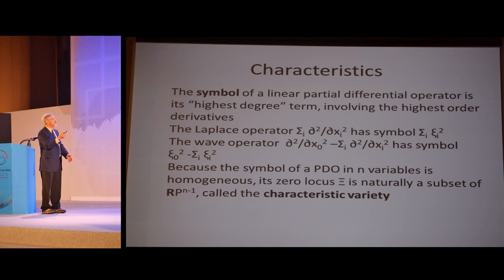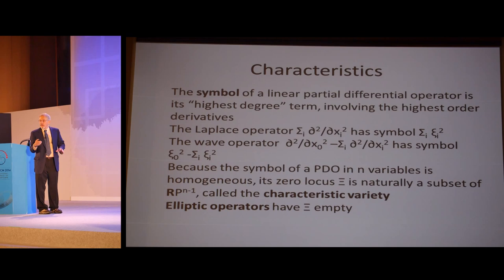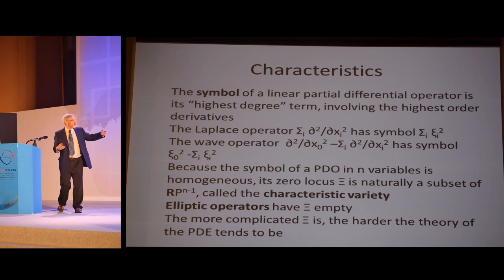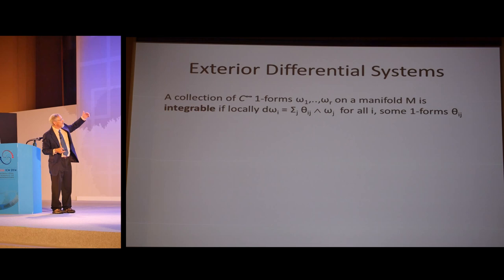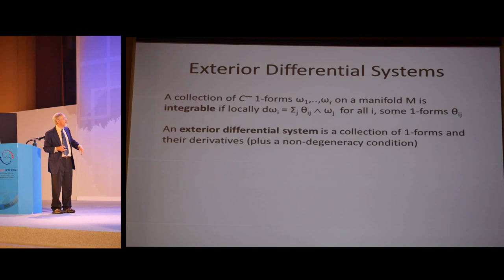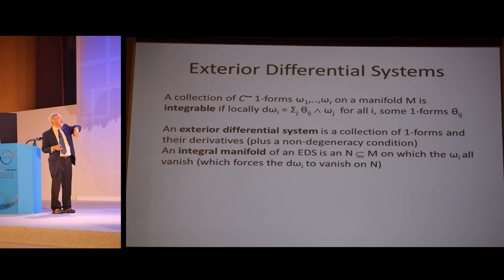You'll notice, because the symbol is homogeneous by definition, all the terms have the same degree, its zero locus actually sits in RP^(n-1). That's called the characteristic variety. You'll notice for the Laplace operator, the characteristic variety is empty, whereas for the wave operator, it's not. It's a cone. Elliptic operators, in general, the ones where the characteristic variety is empty, these are the easiest ones to deal with. And the more complicated the characteristic variety is, the harder the theory of the PDE is. Exterior differential systems, as I mentioned, you have a collection of one-forms. It's integrable if d of the one-forms is, as it were, the ideal generated by the one-forms. Then that's the Frobenius condition. But in any case, an exterior differential system's collection of one-forms and their derivatives, there's also a non-degeneracy condition I won't go into. An integral manifold is just an n for which the omega_i's all vanish, and then it's automatic that the d omega_i's vanish on n.